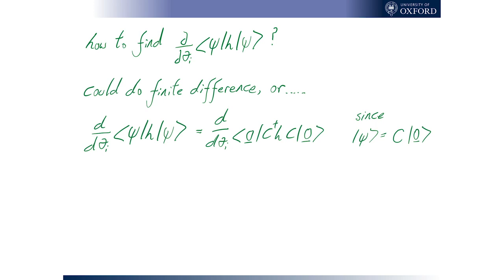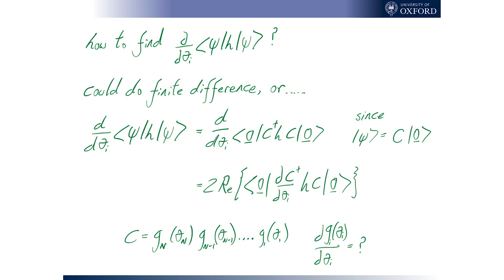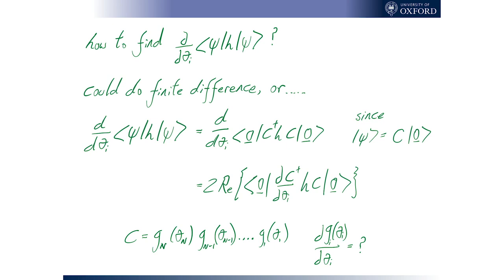So a different way to go at it is just to manipulate it a bit. When remembering that these states are just the circuit acting on a fixed reference input state, we can just chain rule this and see that it's nothing more than the real part of this little object here. We've got our circuits, we've got our little set of Pauli terms, and then we have this object that's a little bit weirder looking. It's the derivative of our circuit operator with respect to the parameter we care about.